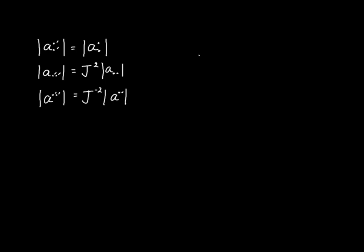The first thing we'll do is to denote that the letter z is going to be our way of representing the determinant of our covariant metric tensor. So instead of having to write this expression every time, we'll just write the letter z. And that means, likewise, that z prime is going to equal z with two lower dots with primes on them.